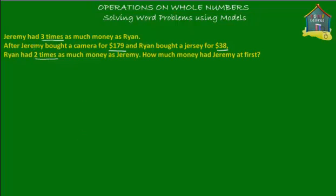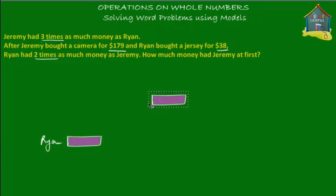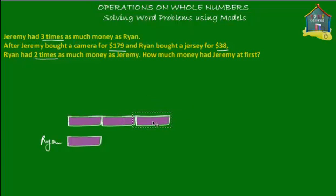So here goes the model diagram. We have that Jeremy had three times as much money as Ryan. Let's start with the model diagram for Ryan. Let's suppose Ryan had this block of money and put his name against it — let's color it purple. If Ryan had one block of money, then Jeremy, who had three times as much, would have three purple blocks of money: number one, number two, and number three.